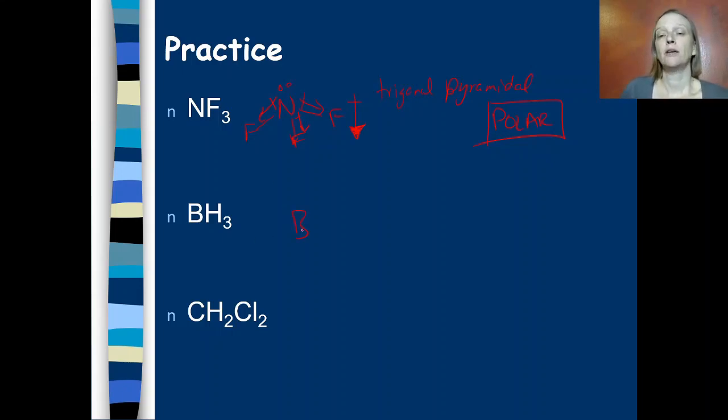With boron trihydride, boron is happy with just six valence electrons. It does not get a full valence shell. It does not have a lone pair of electrons. This is a trigonal planar structure. Hydrogen and boron are almost identical in electronegativity. Hydrogen is just slightly more electronegative than the boron is. But these are extremely weak dipoles here. But it almost doesn't matter because the trigonal planar shape, geometry, is perfectly symmetric. It's a perfectly symmetric three-way tug-of-war between the three hydrogen atoms. So this is a non-polar molecule.